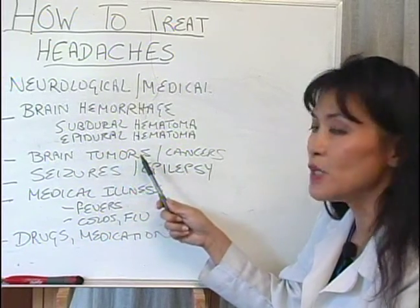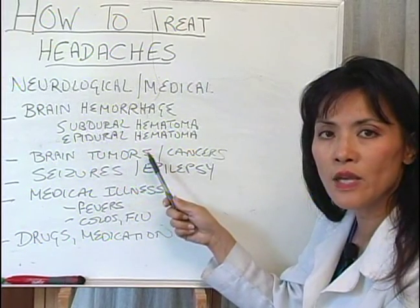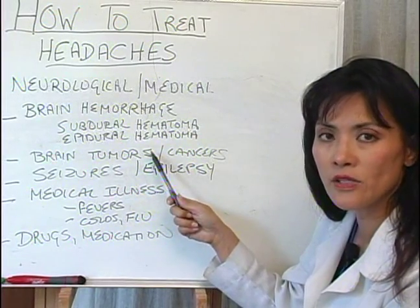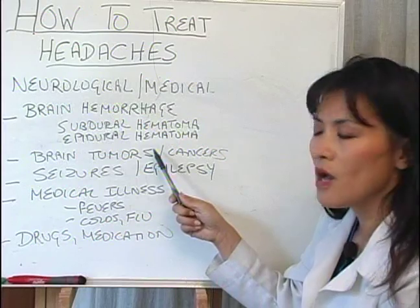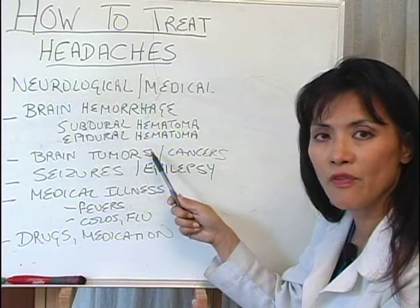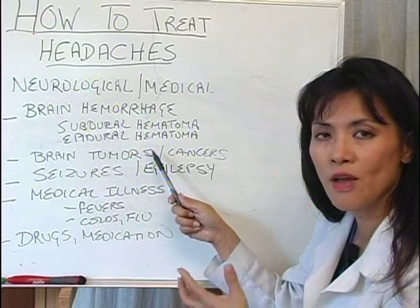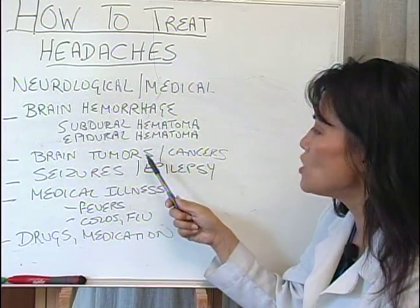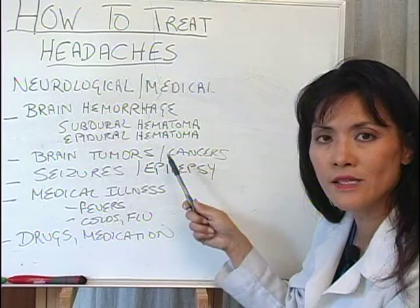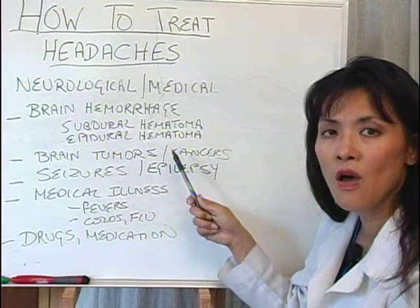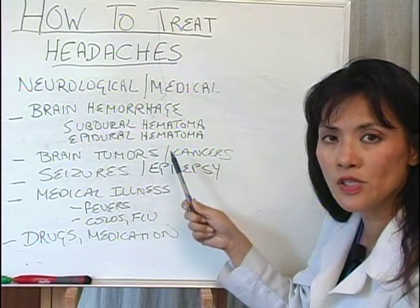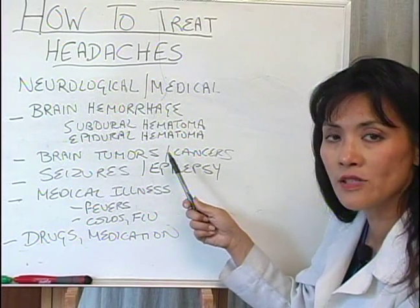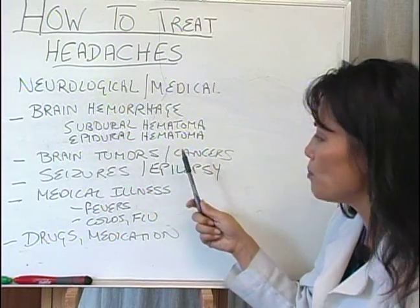You should always get a regular check-up, especially if you have a family history of brain tumors and cancers, because a lot of these conditions are hereditary and have a strong genetic component.